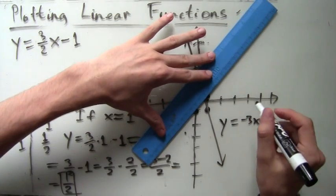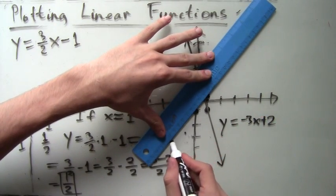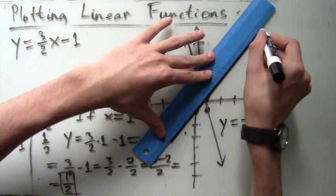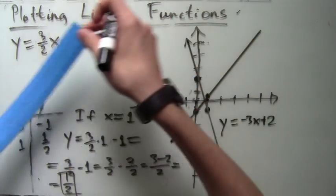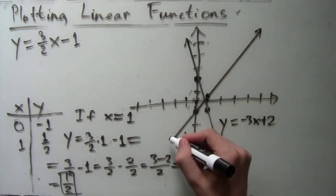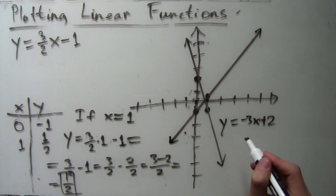Now we just grab the ruler, connect the dots, and there it is, the plot of the linear function. We just have to add the arrows and the label.